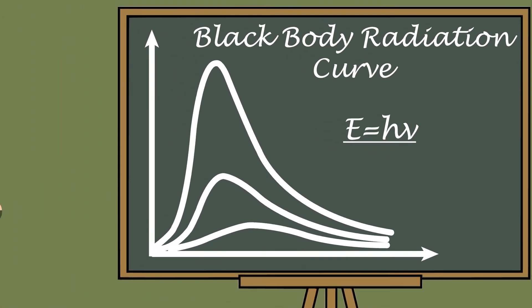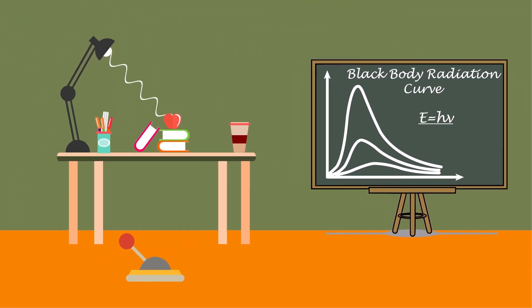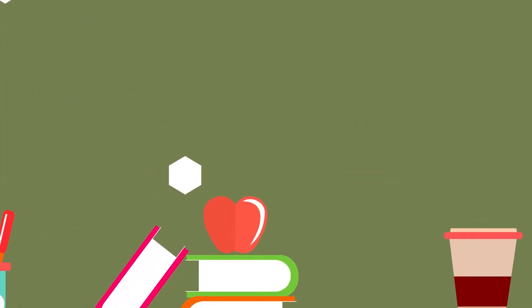Einstein took the help of Max Planck's radiation law to explain the photoelectric effect. To explain blackbody radiation, Max Planck suggested that light is not a continuous wave, as Maxwell had said. Rather, light consists of particles. Einstein named this quantum of light photon.